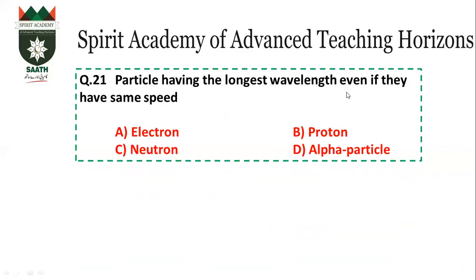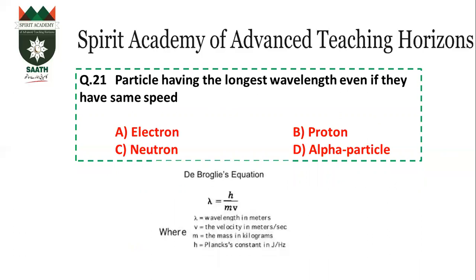Question number 21: Particles having the longest wavelength, even if they have the same speed. By the de Broglie equation, λ = h/mv — if mass is less, wavelength is greater. Longest wavelength means the most wavelength, so mass must be the smallest. The smallest mass belongs to the electron. The answer is A.